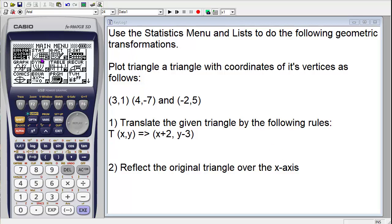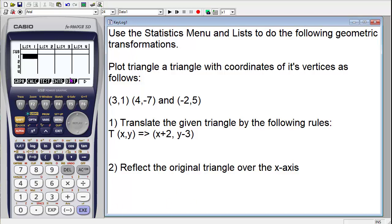We're in the Casio FX 9860G2, and we need to go to the statistics menu and click execute. That starts it, and you'll see that we have our list. What we're going to do is enter list 1 and list 2 as our x and y values in our coordinate of the vertices.